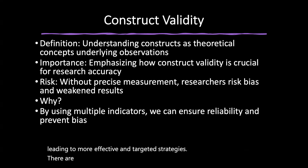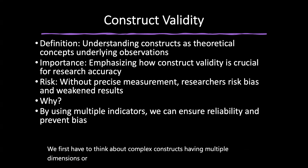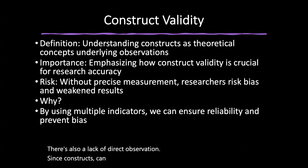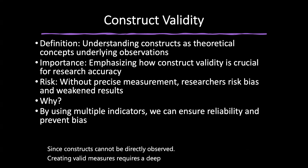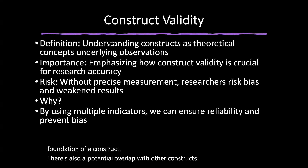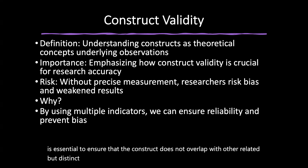There are challenges in assessing construct validity. Complex constructs have multiple dimensions requiring careful and nuanced measurement. Since constructs cannot be directly observed, creating valid measures requires deep theoretical understanding. There's also potential overlap with other constructs — discriminant validity is essential to ensure the construct does not overlap with other related but distinct constructs, which can lead to confusion or incorrect interpretations.